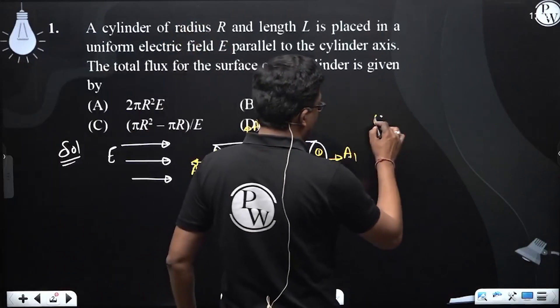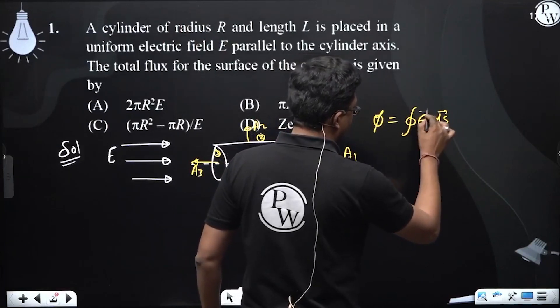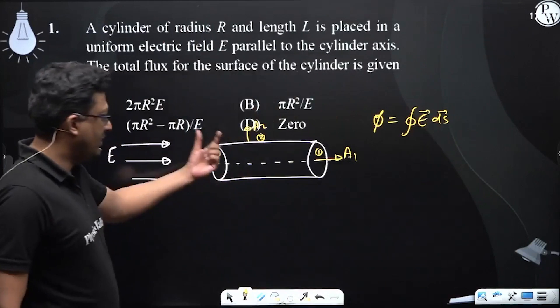As we know, flux is given by closed integral E dot ds. Now, considering these three surfaces,